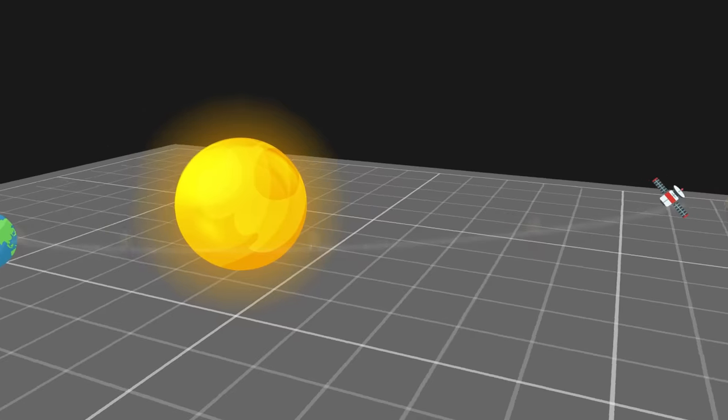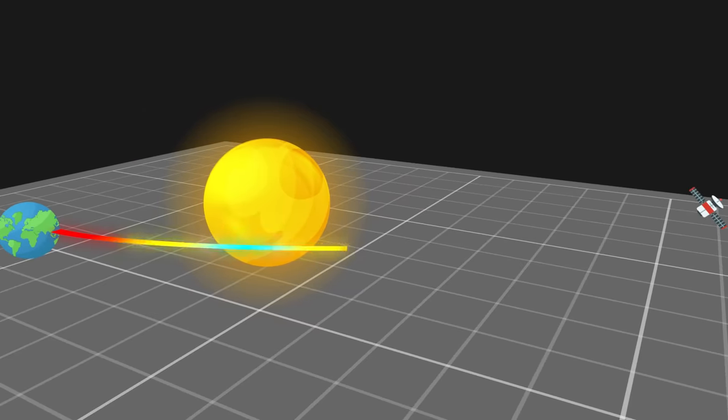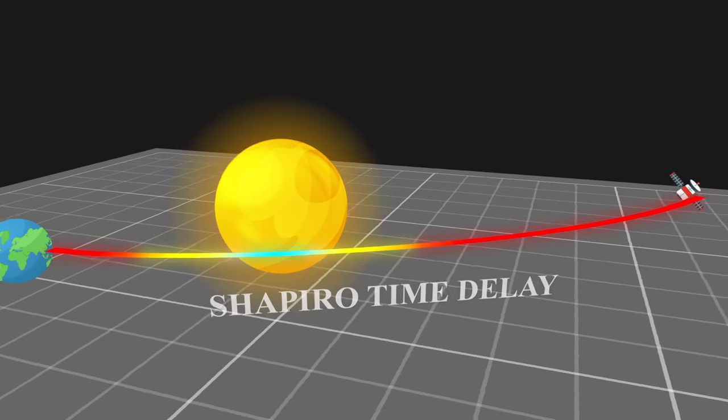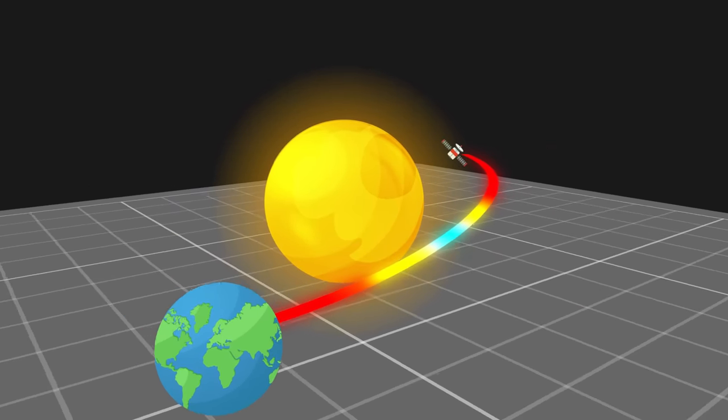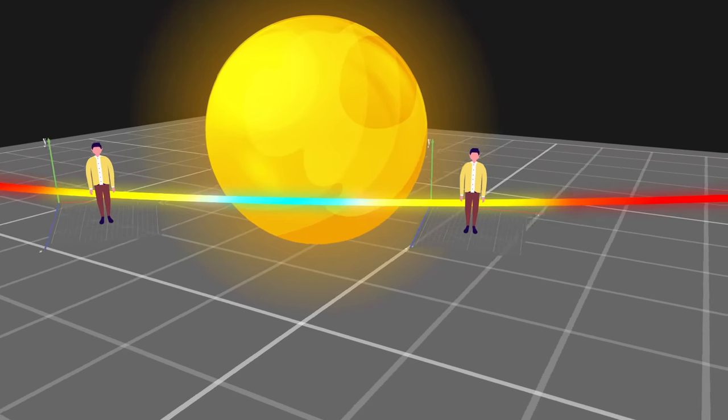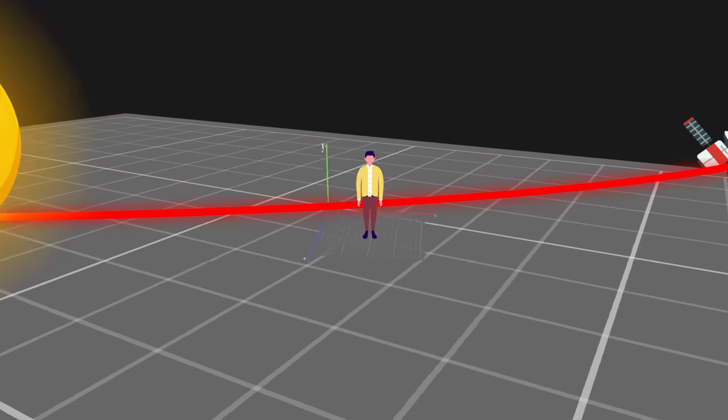From the perspective of Earth, deflected light is slowed down, known as the Shapiro time delay. It is caused by space-time dilation from the perspective of an outside observer, such as the Earth. However, the speed of light is always measured equal to C locally by each observer.